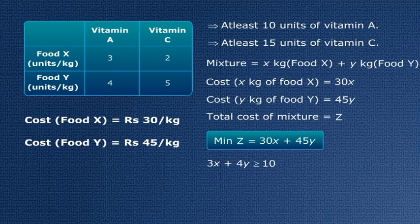Similarly, for the vitamin C content, that should be at least 15 units. 2X units of vitamin C from food X and 5Y units from food Y. So the total vitamin C content, 2X plus 5Y, should be greater than or equal to 15.